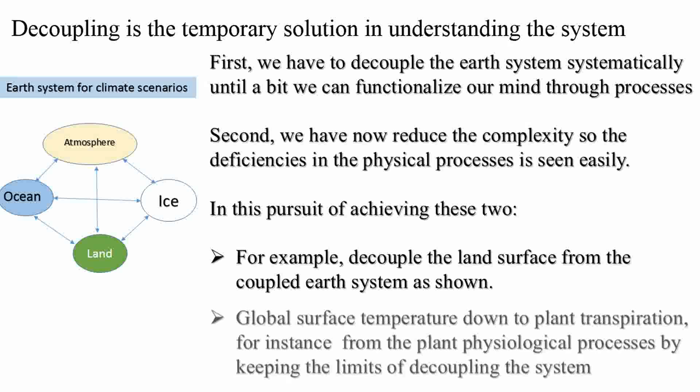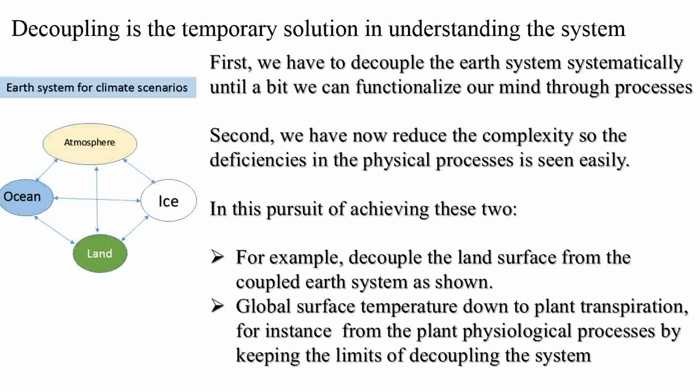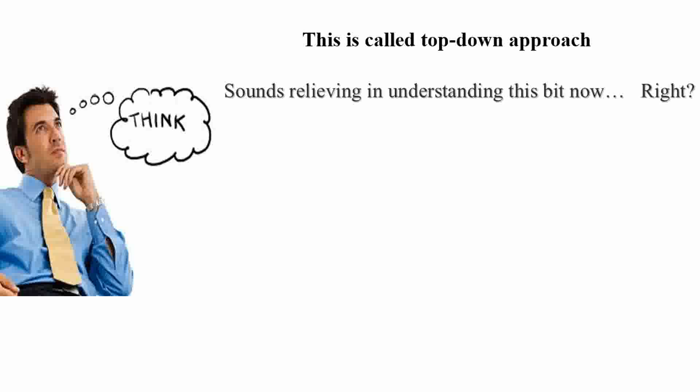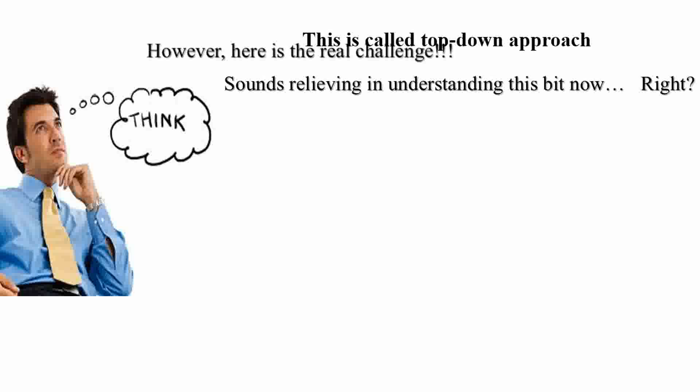For example, we have decoupled the land surface component and now we are seeing the sensitivity of evapotranspiration in some forest region towards some physical process. This is called the top-down approach of understanding piecewise by the repetition of several key processes towards a crucial climate variable.